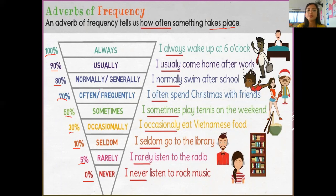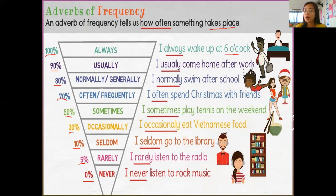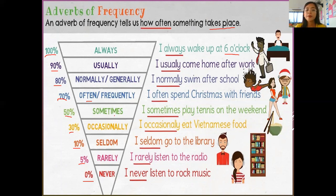For example: 'always' — I always wake up at 6 o'clock, meaning every day from Monday to Sunday. 'Usually' at 90% — I usually come home after work. At 80% is normally or generally — I normally swim after school. Then 'often' — I often spend Christmas with friends. At 50% is 'sometimes.'